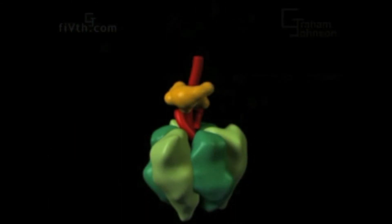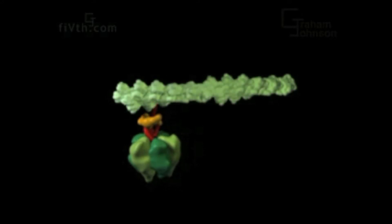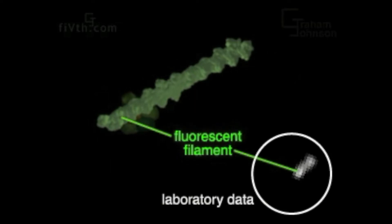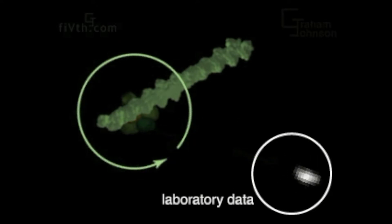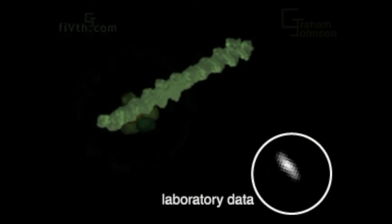To show the rotation of the central shaft, a short fluorescent actin filament was experimentally attached to it. Single filaments attached to single F1 ATPases can be visualized in the microscope. When ATP is added, the filament starts spinning, directly demonstrating the mechanical properties of this remarkable molecular machine.